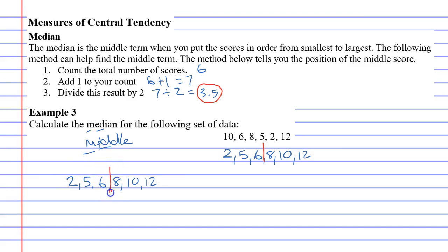And 3.5 means it's the number 0.5 after the 6, or halfway past the 6. So it's between the 6 and the 8. And what you notice by using this counting method, we ended up at halfway, just like we did over here.